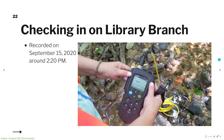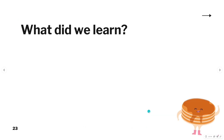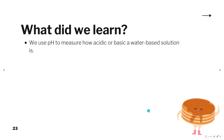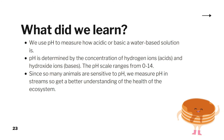So what did we find at the library stream? We measured a pH of 6.8, which is very close to that neutral pH of 7 that we really want to see in streams — so that's pretty good news. In summary, we use pH to measure how acidic or basic a water-based solution is. The pH scale ranges from 0 being the most acidic, 14 being most basic, and 7 being completely neutral. And since so many animals are sensitive to pH, we measure pH in streams to get a better understanding of the health of the ecosystem. Thank you for tuning in to this video about pH. Up next, we're going to learn about nutrients.